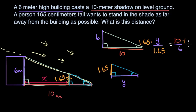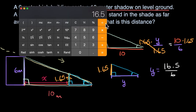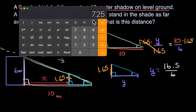To solve for Y, we multiply both sides by 1.65. That cancels, and I get Y is equal to 10 times 1.65 — which is 16.5 — divided by six. 16.5 divided by six equals 2.75. But remember, Y is 2.75, and X — how far you can walk away from the building — is going to be 10 minus 2.75, which is 7.25.